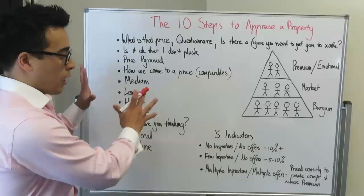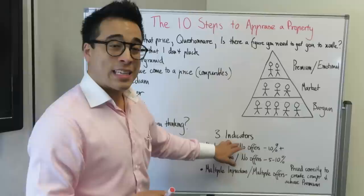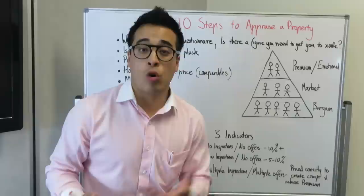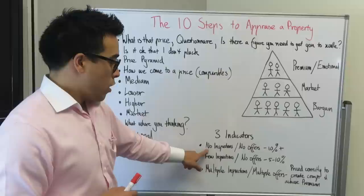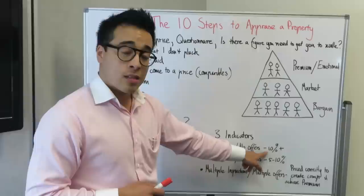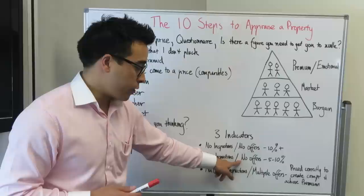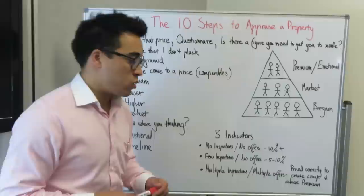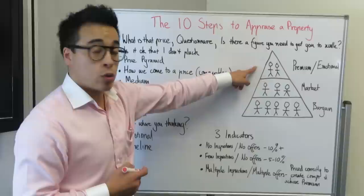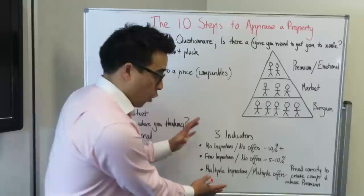Once you've got the listing, you can talk about the three indicators — to know whether or not we are right or wrong in price. We always like to meet up with our clients after the first open for inspection to see what feedback we got from the market. No inspections and no offers generally means the property is 10% or more above where it needs to be priced. A few inspections and no offers means it's generally 5 to 10% above. Multiple inspections and multiple offers means it's priced correctly to create competition and achieve that premium result. So after the first open for inspection, we'll get a very clear signal on whether or not we're right or wrong in terms of price.